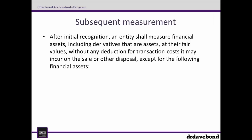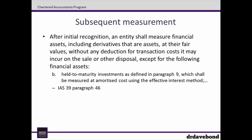To determine how this bond gets accounted for after initial recognition, we turn to IAS 39, paragraph 46. After initial recognition, an entity shall measure financial assets at their fair values without any deduction for transaction costs, except for held-to-maturity investments as defined in paragraph 9, which shall be measured at amortized cost using the effective interest method. This is relevant here because SARA has elected to account for this investment as a held-to-maturity investment.